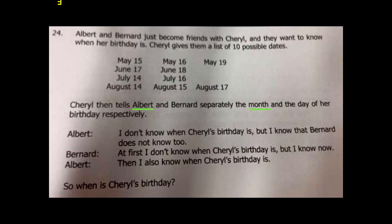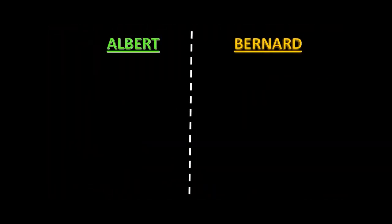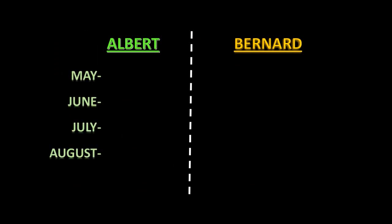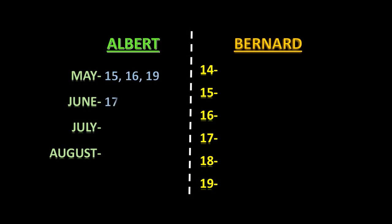Now a few things to consider. Albert has been told the month and Bernard has been told the day. Given the sample data, Albert has May, June, July, and August. Whereas Bernard has 14th, 15th, 16th, 17th, 18th, and 19th as his samples. Now May consists of the dates 15th, 16th, and 19th. June has 17th and 18th. July has 14th and 16th. August has 15th and 17th.